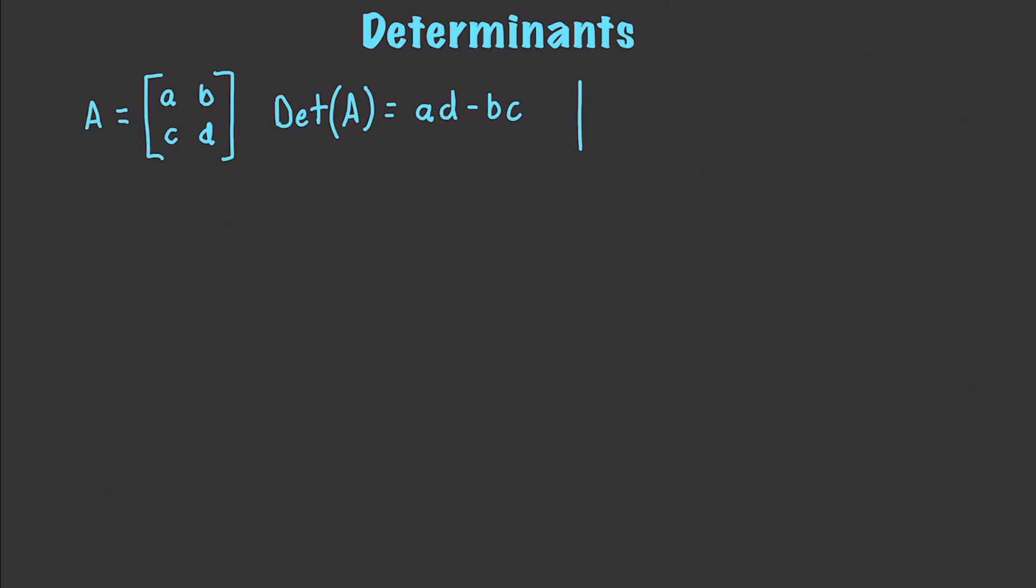Another way to write this matrix as a determinant is to just use straight bars like this. If the determinant of a matrix is equal to 0, that means the matrix doesn't have an inverse. And if it is not equal to 0, that means it has an inverse.